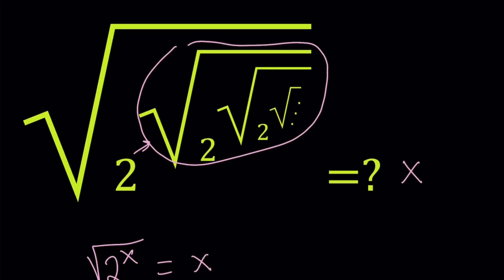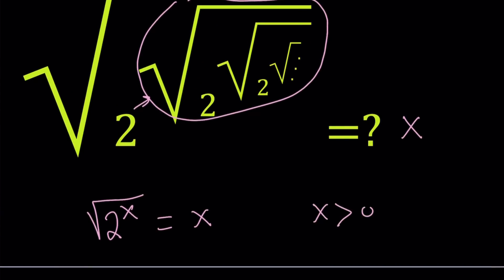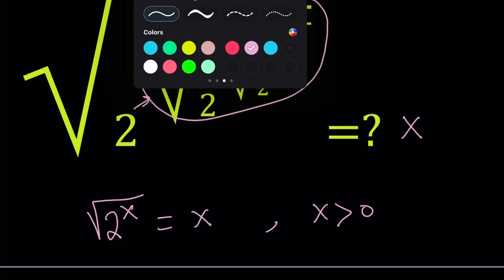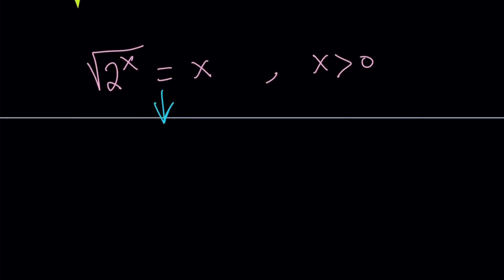And isn't this so simple? You can solve this by guess-and-check easily. But here's the thing: x is positive, obviously, because it's square root of 2 to the x, which is always positive. So x can't be negative. Under those conditions, let's square both sides. Since everything is positive, we can square without introducing extraneous solutions. If I square both sides, I get 2 to the power x equals x squared, and x is positive.